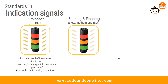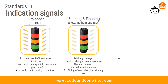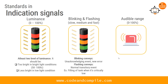The second standard is about blinking and flashing. The blinking and flashing rates should allow the user to differentiate different sequences — slow, medium, and fast. Generally, blinking is used for unacknowledged events or new errors, while flashing is used for normal transitory events such as the filling of a tank.